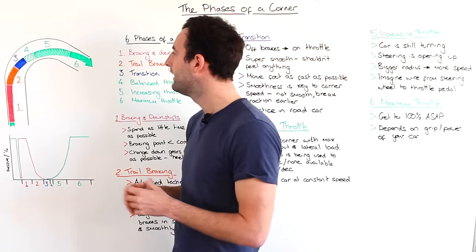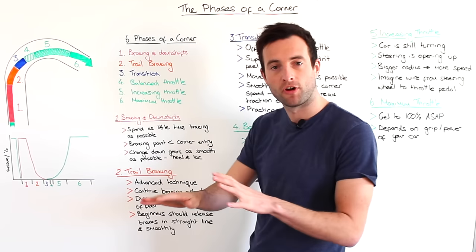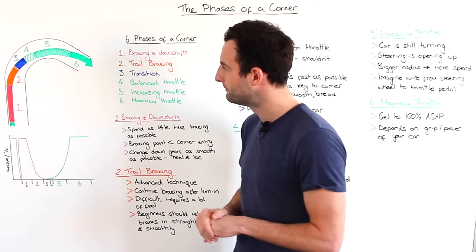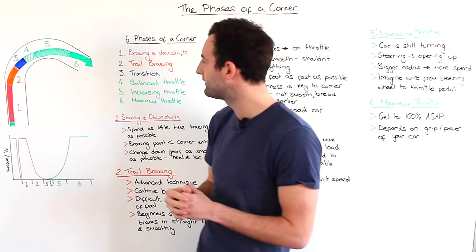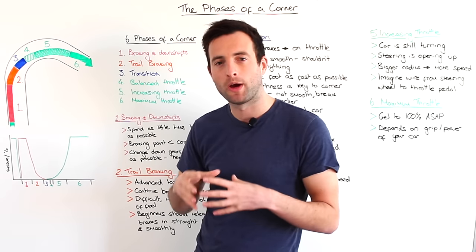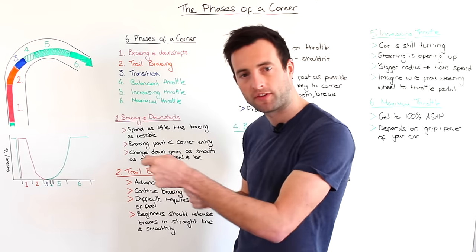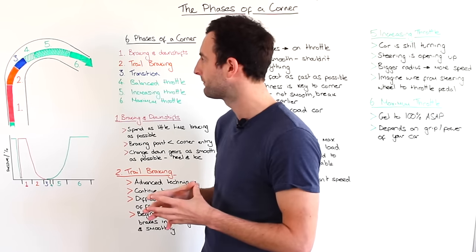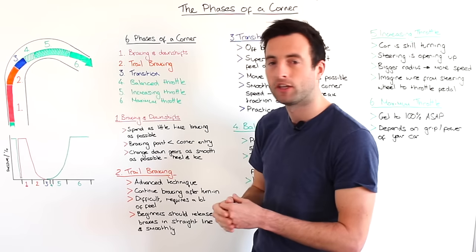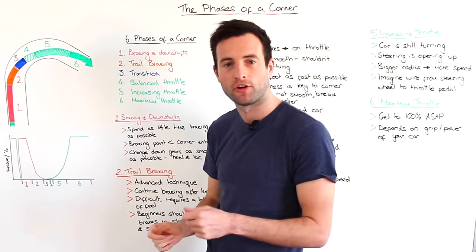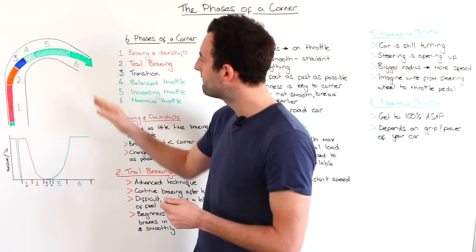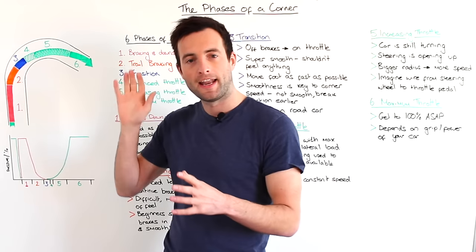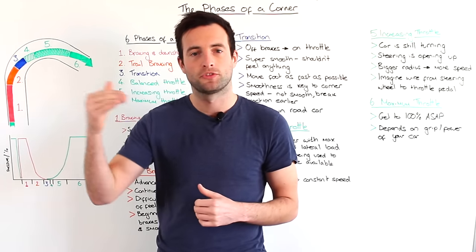Section three, the blue section here, is where we transition from coming off the brakes to beginning to get back on the accelerator pedal. Phase four, the green section, is the balanced throttle phase where we're turning the car as hard as we can, however we're not decelerating or accelerating the car. Section five, the longer section, is where we're increasing the throttle and we open up the steering angle. And finally section six is maximum throttle when we're flat out and heading down the next straight towards the next corner.